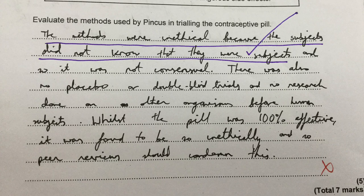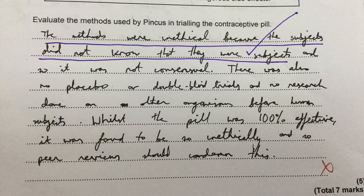In this answer, the student says the methods were unethical because the subjects did not know that they were subjects. I've given her one mark for that — they're not aware it's an experiment, and by talking about the fact that it's unethical it counts as a con. Much better to separate answers out into pros and cons. She also says it was not consensual, there was no placebo or double-blind trials, and no research done on other organisms before human subjects. All of that is true, but they've given you the information in the passage to draw your answers from. None of this information is in the passage, so you're going further away from what they want you to do. Be guided by the question itself.